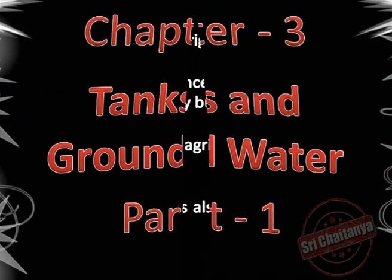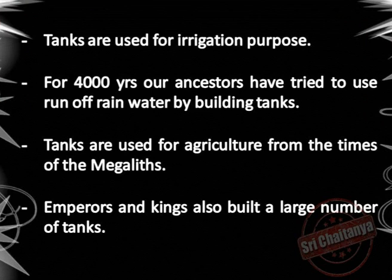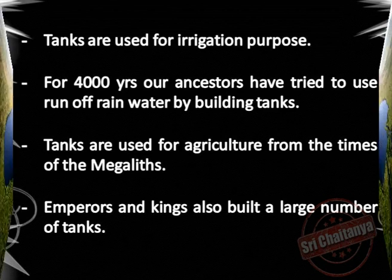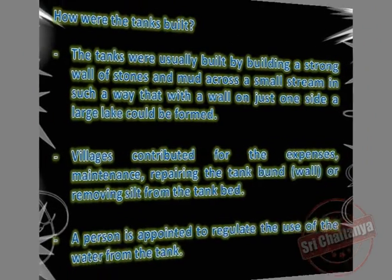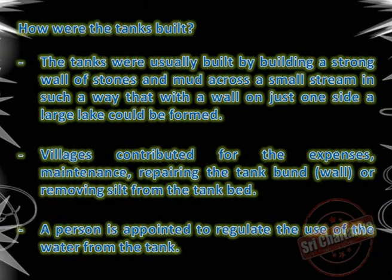Tanks and groundwater: tanks are used for irrigation purposes for 4000 years. Our ancestors tried to use runoff rainwater by building tanks. Tanks are used for agriculture from the times of the megaliths. Emperors and kings also built a large number of tanks.